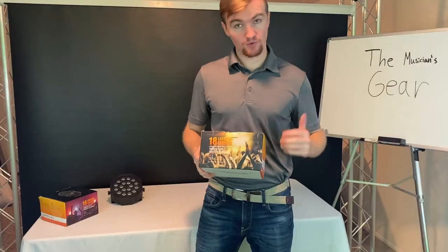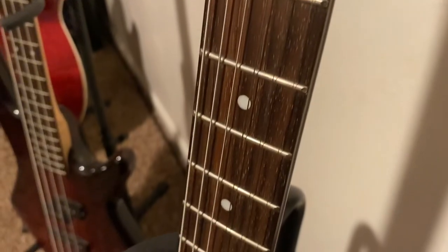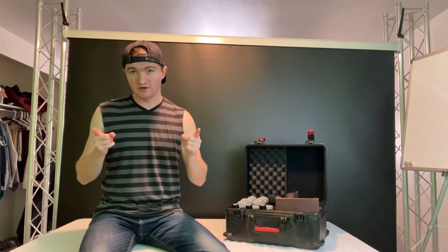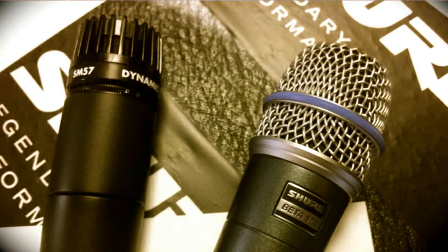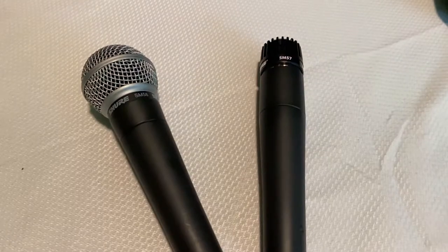Welcome to another episode of the Musician's Gear. Today we're going to be talking about two microphones that are highly used in the music industry and have been for a long time because they are super dependable and just great to use, and that of course is the SM57 and the SM58 by Shure.